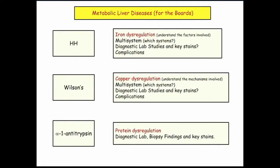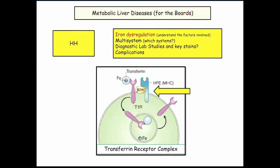So metabolic liver disease: it's hemochromatosis, Wilson's disease, alpha-1. Alpha-1, two slides. Wilson, three slides. Hemochromatosis, 20 million slides. Here it goes.